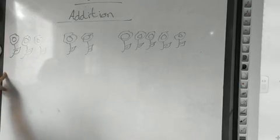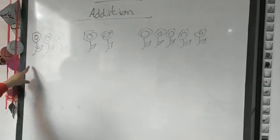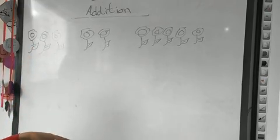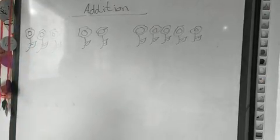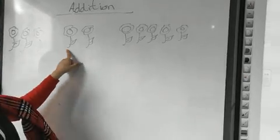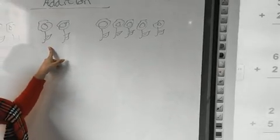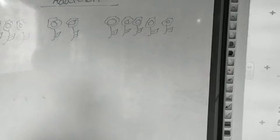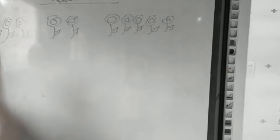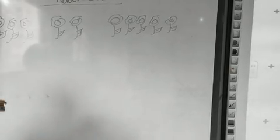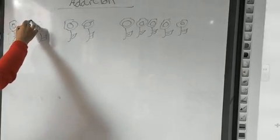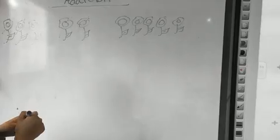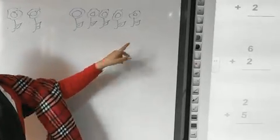Now if I have — how many flowers here? One, two, three — three flowers. I have three flowers. And someone gave me two more flowers. So the total with me, how many flowers in total? Let's count: one, two, three, four, five. So the total becomes five.